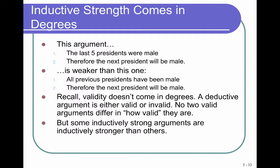However, there are degrees of strength in inductive arguments — some are stronger than others because of their premises. For example: the last five presidents were male, therefore the next president will be male — that has some strength. But it's weaker than: all previous presidents have been male, therefore the next president will be male. The second argument is stronger because the evidence is more inclusive; we have more examples of male presidents than just five. This is different from deductive reasoning, where there are no degrees of validity — a deductive argument is either valid or invalid. No two valid arguments differ in how valid they are. However, inductive arguments can vary in how strong they are.